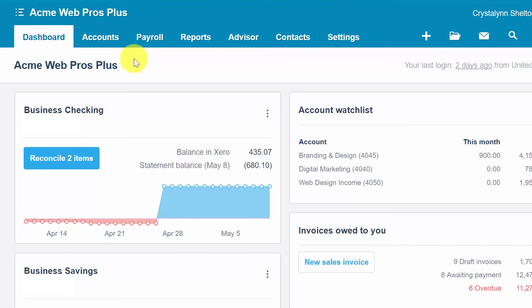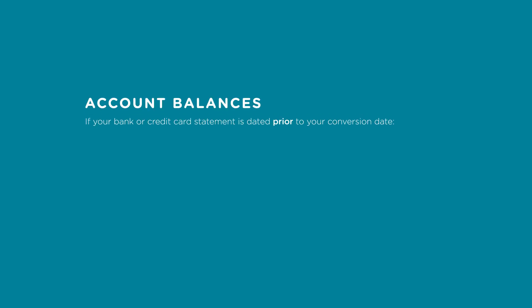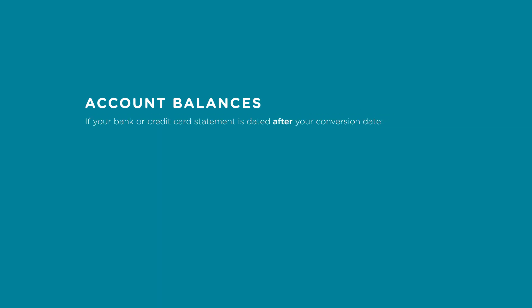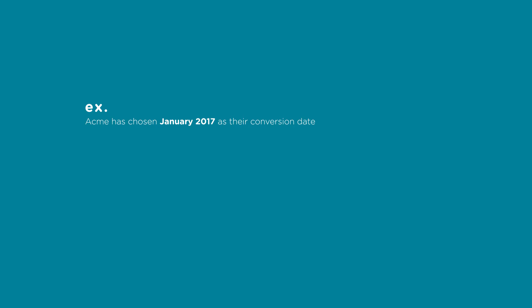Please note that most bank and credit card statements will have a beginning and an ending balance. The balance that you should enter depends on the date of the bank statement. If your bank or credit card statement is dated prior to your conversion date then you will use the ending balance on the bank or credit card statement as the account balance in Xero. If your bank or credit card statement is dated after your conversion date then you will use the beginning balance on the bank or credit card statement as the account balance in Xero. For example, let's assume that Acme WebPros Plus, our fictitious company, has chosen January 2017 as their conversion date.